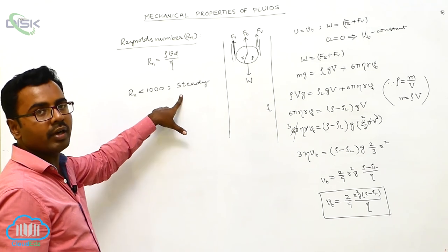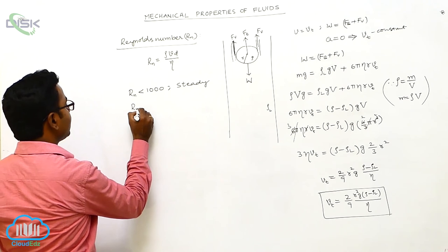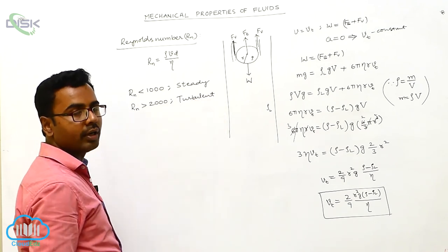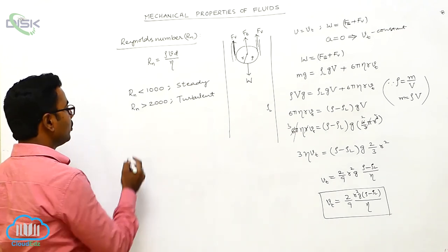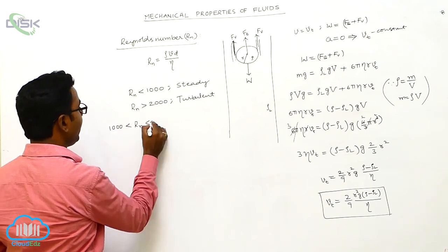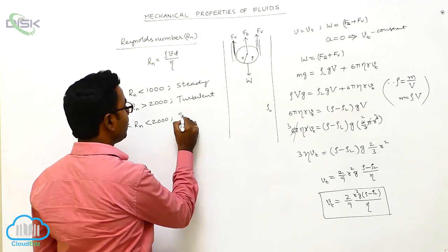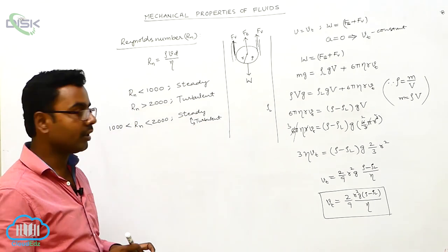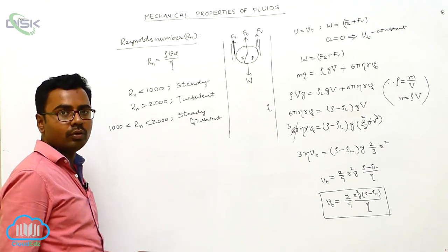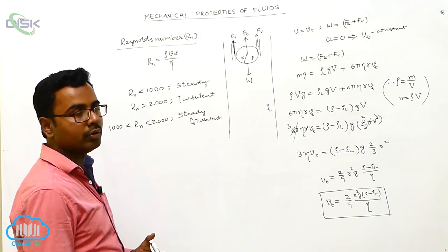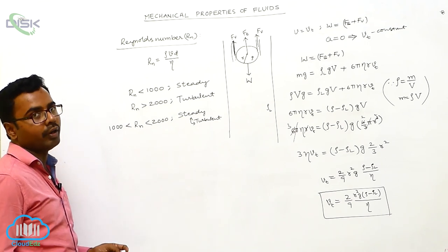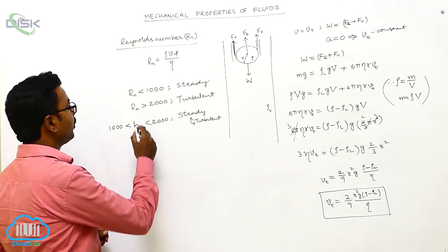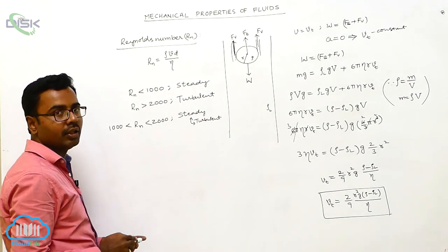If Rn is less than 1000, the fluid flow is steady. If Rn is greater than 2000, the fluid flow is turbulent. If Rn is between 1000 and 2000, the fluid flow switches between steady and turbulent. By using the Reynolds number value, we can also find the critical velocity of the fluid flow by substituting the critical Rn value.